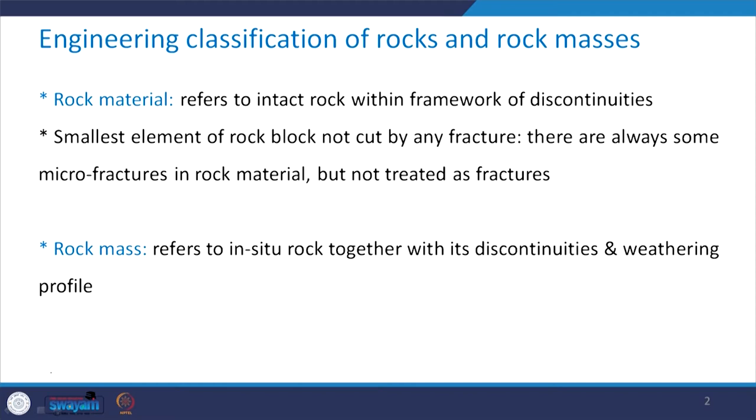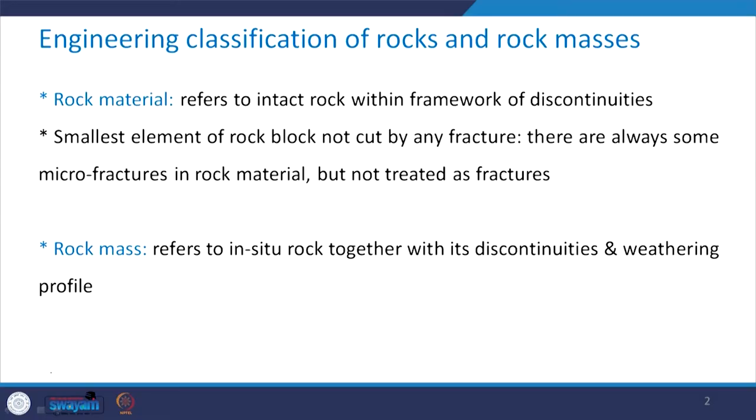When I say rock material, it refers to the intact rock. Whenever I say either rock, rock material, or intact rock, it is one and the same thing. The smallest element of rock block which is not cut by any kind of fracture is what we call as the intact rock. Obviously, there is always going to be the presence of micro-fractures in the rock material, but these micro-fractures are not treated as fractures or discontinuities or joints. So intact rock will not have any joint.